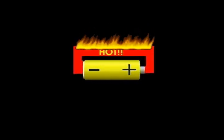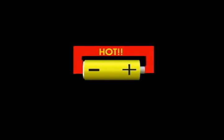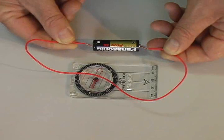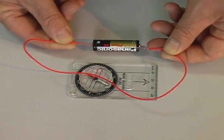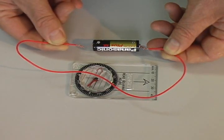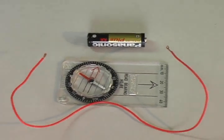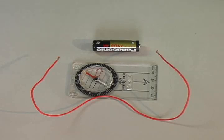In 1820, he was demonstrating this to some friends when he noticed something very strange. Every time he connected the wire to the battery, a compass needle close to the wire would move. Ørsted had discovered a relationship between electricity and magnetism.